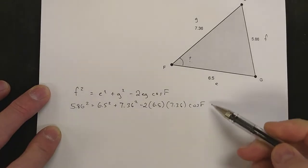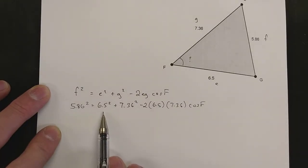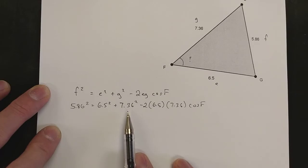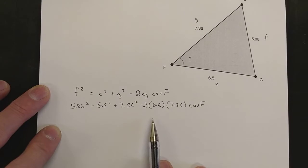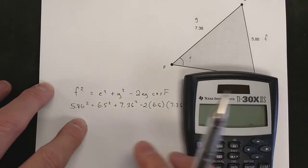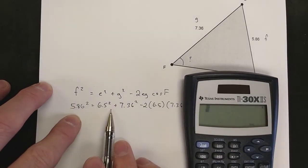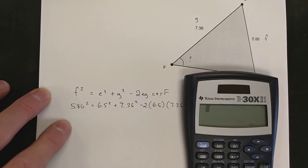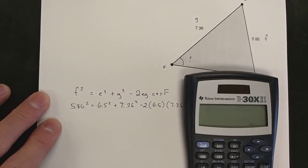Remembering that I want F by itself, I've got to get rid of everything else on this side. I'm going to subtract the 6.5 squared and subtract the 7.36 squared. The thing most often forgotten by students is that all of this is multiplied together, so the only way you're going to get rid of this is to divide it. I'm going to do it the quick and easy way.